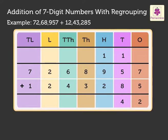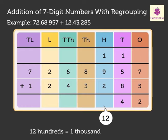Now, 1 plus 9 plus 2 gives 12. Regroup the 12 hundreds to 1 thousand and 2 hundreds. Carry the 1 thousand to the thousands column and write 2 in the hundreds column.